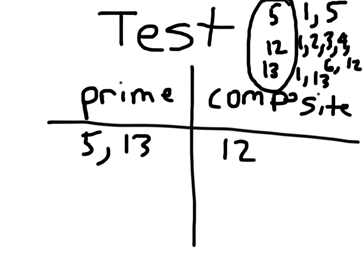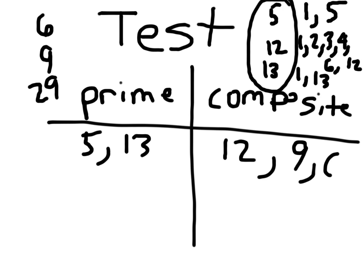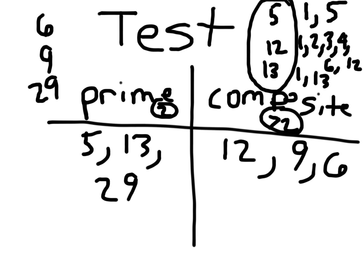Please sort these three on your own: 6, 9, and 29. Nine is a composite number, six is also a composite number — remember, the only even prime number is 2. Twenty-nine is a prime number because there are only two factors: 1 and 29. That's exactly two factors versus more than two for composites.